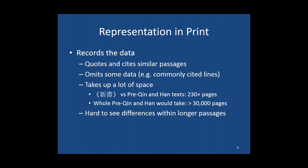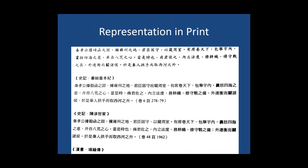One page from a typical book shows a passage from the Xinshu at the top, then below it, exhaustively listed parallels throughout the corpus — in this case two passages from the Shiji, both clearly very similar though not identical to each other or to the Xinshu passage. This representation is helpful if you're interested in detail, but it omits some data for space reasons and still takes up a lot of space. The book for the Xinshu alone is over 230 pages. Extrapolating to the whole set of Pre-Qin and Han texts would result in well over 30,000 pages — an impractically long amount of text. A second issue is that it's quite difficult to see exactly where the differences are within longer passages.